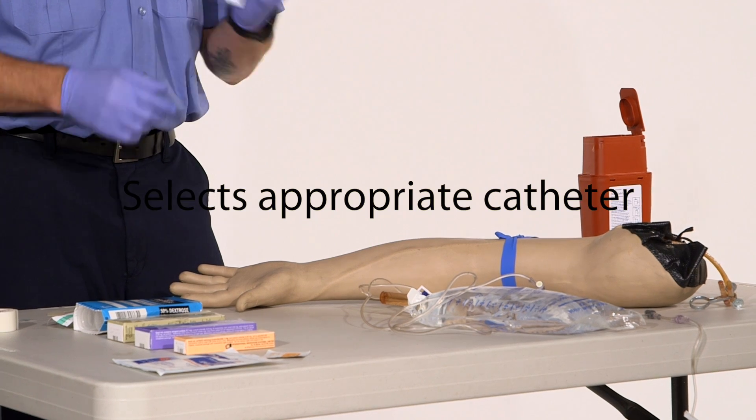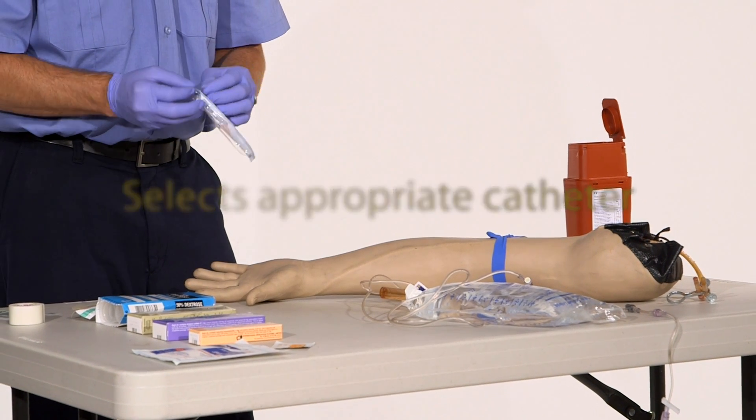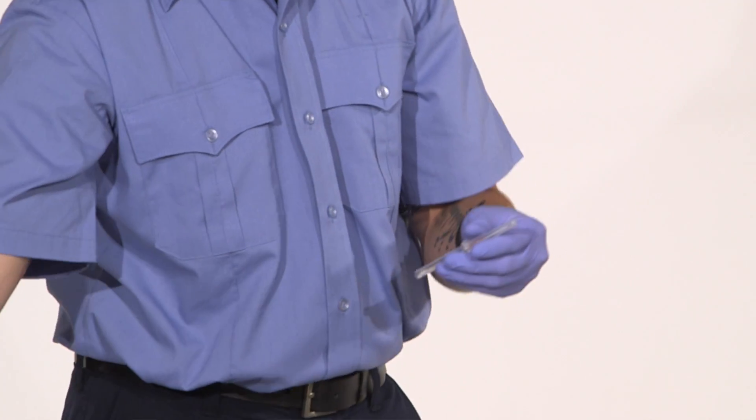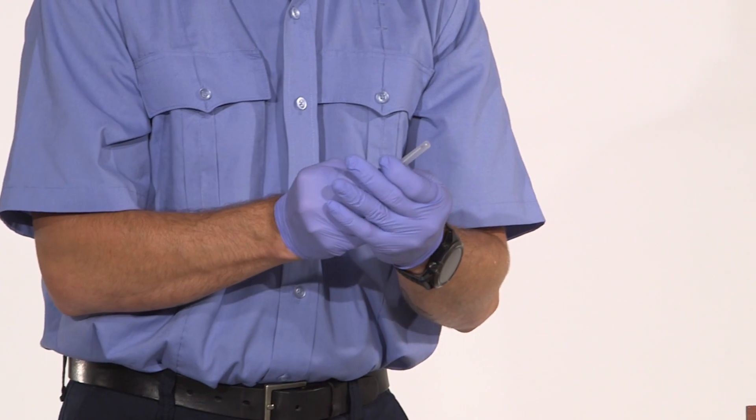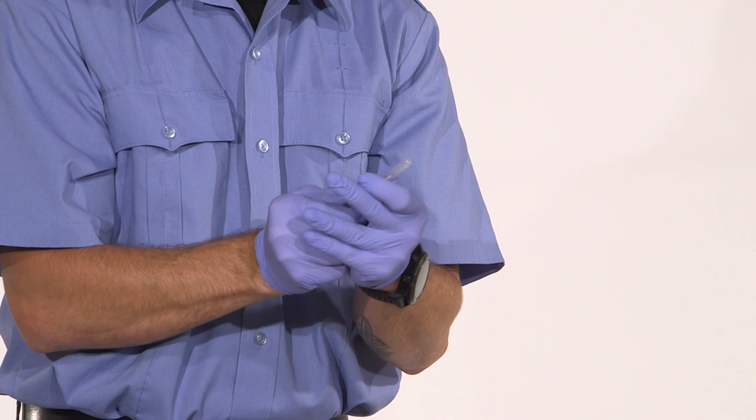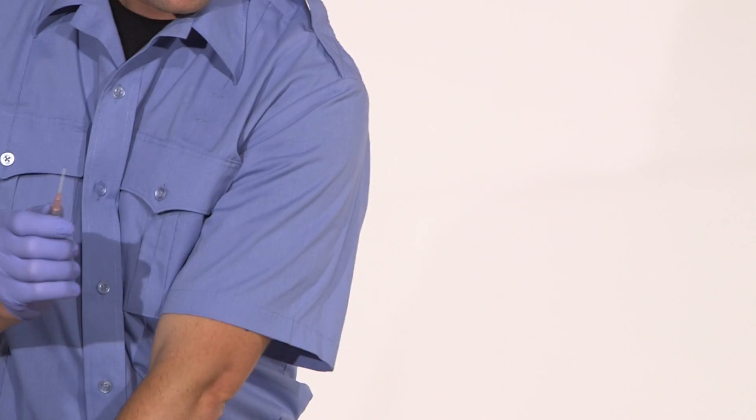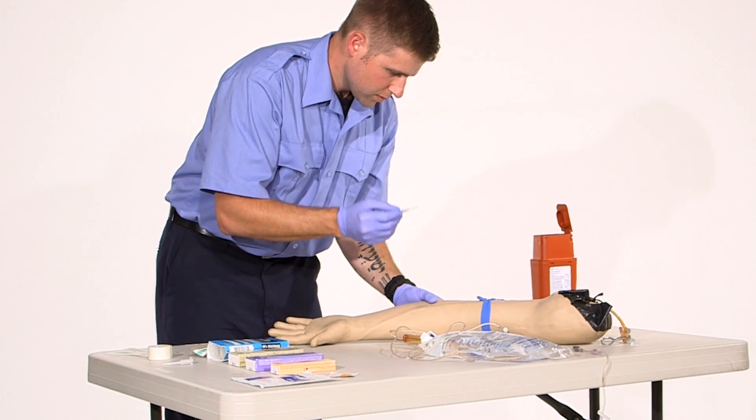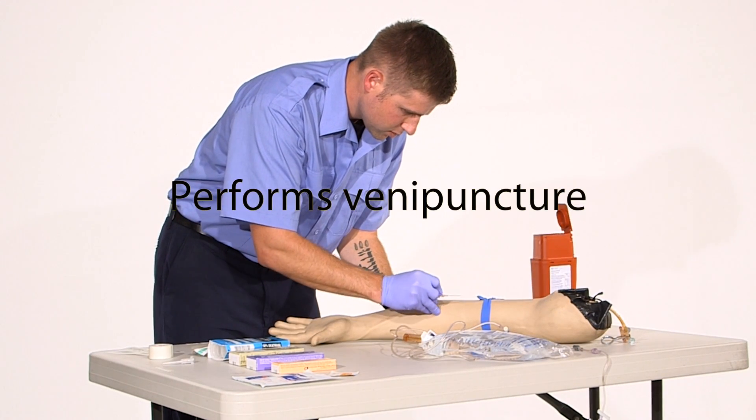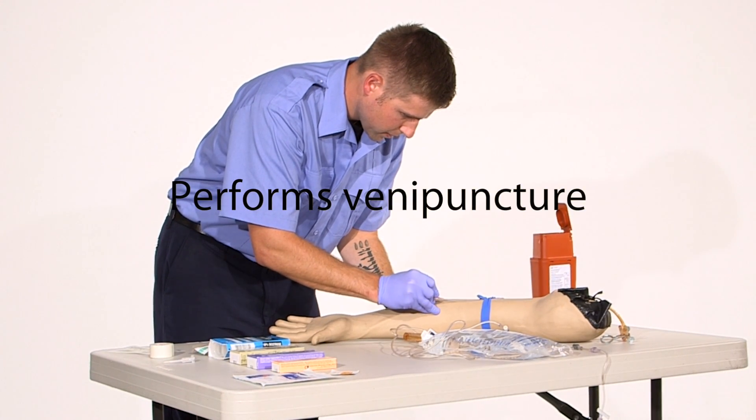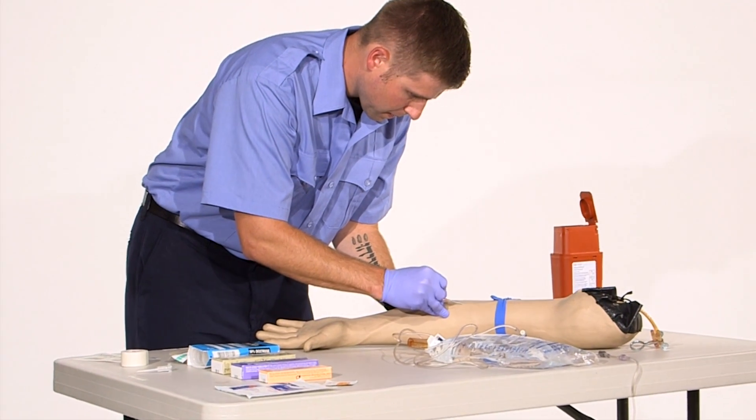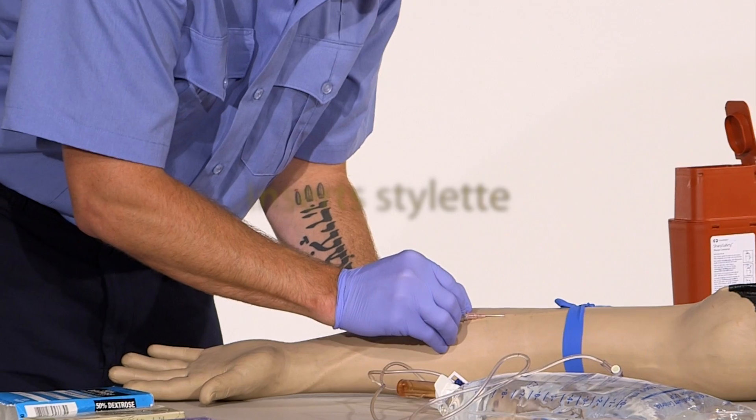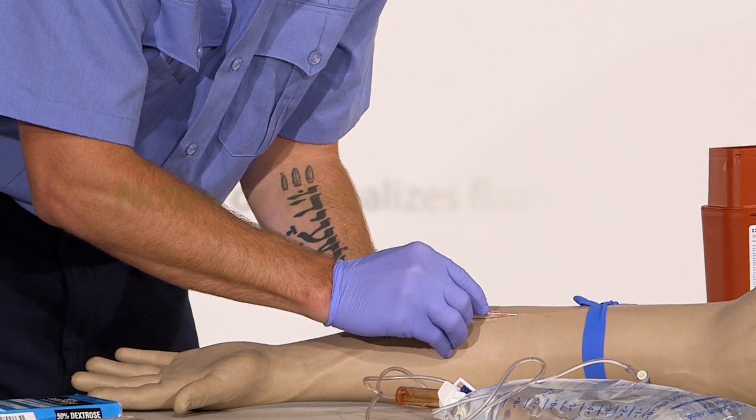I'm going to pick the correct size catheter that I have here. Take the cap off, make sure it's loose. I'm going to place traction on my vein. Bevel up and place the catheter.